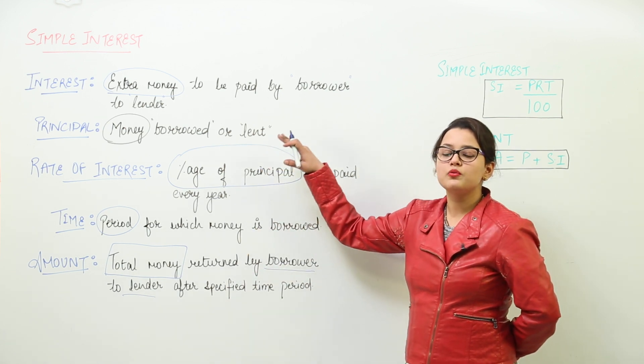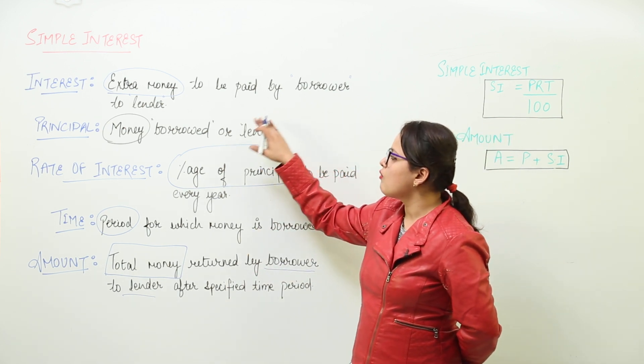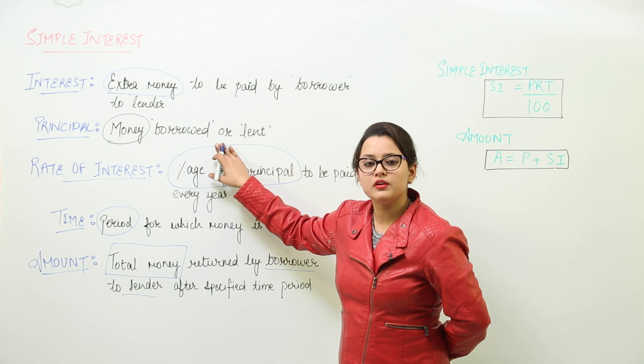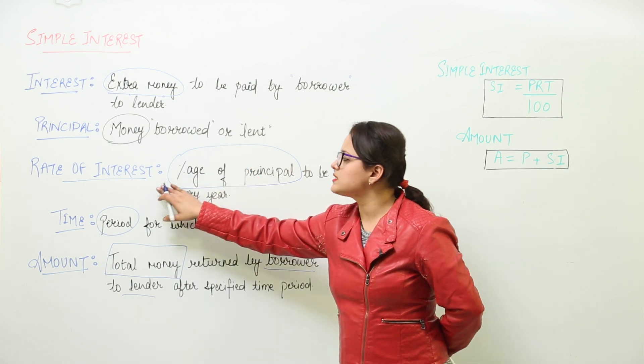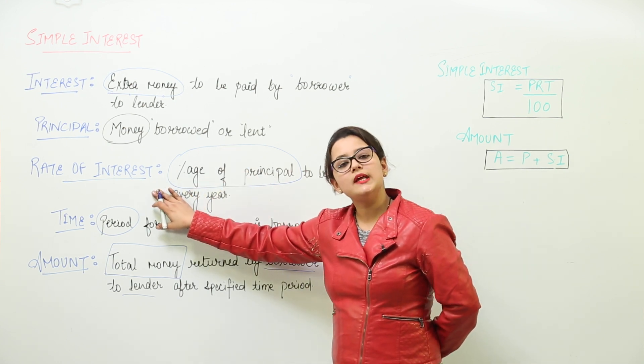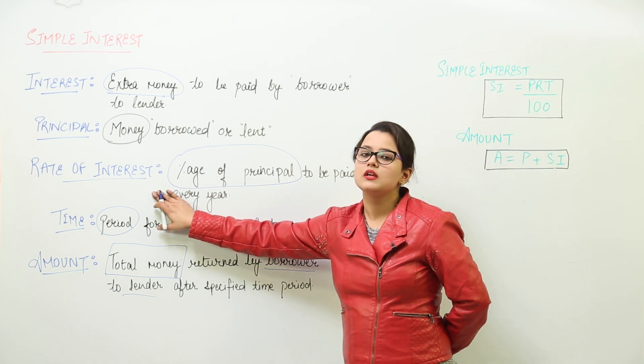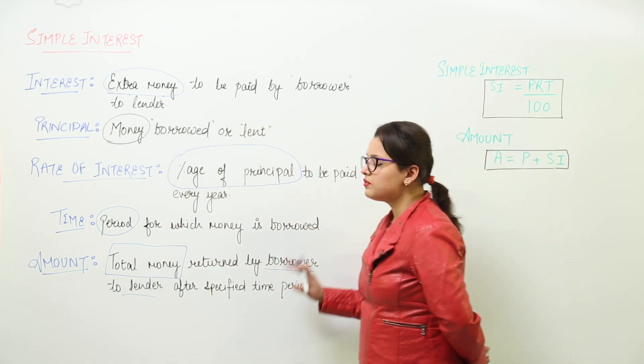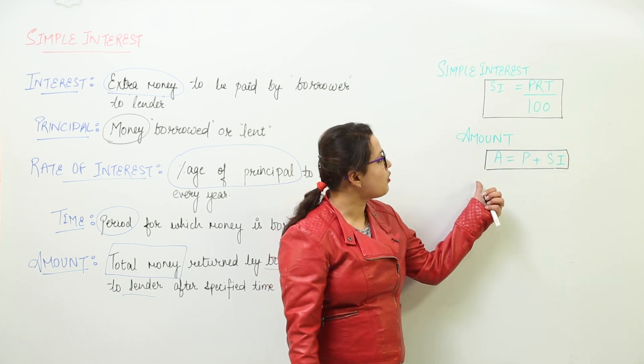Out of that, 10 rupees is my interest. What was my principal? 100 was my principal. And what is the rate of interest? 10% is the rate of interest. Clear? So this was about simple interest. Now let us move on to the formulas.